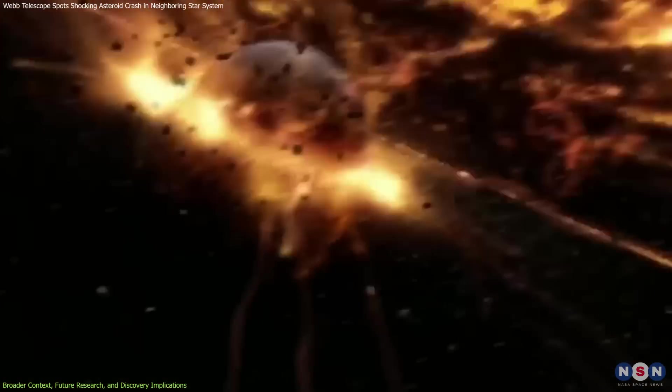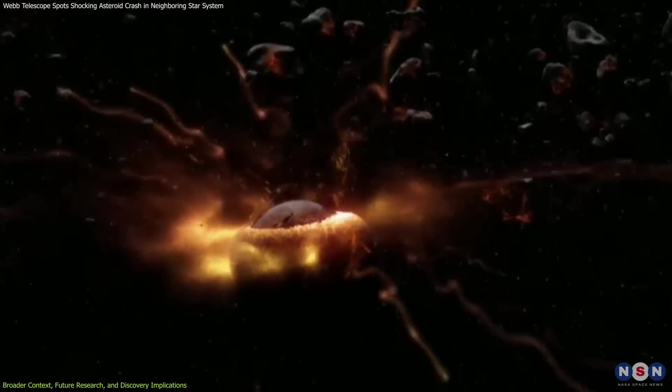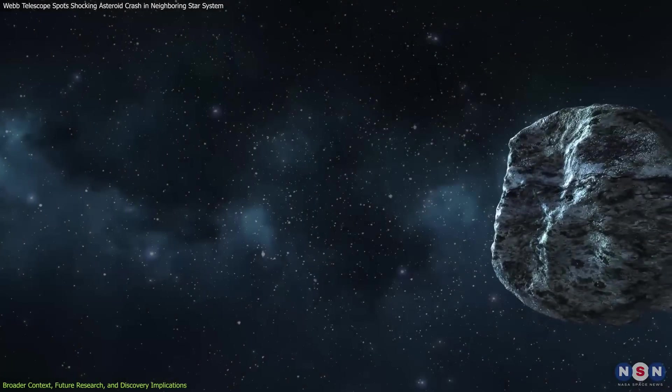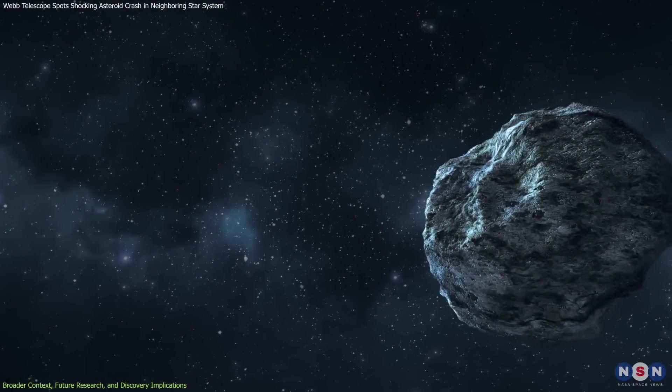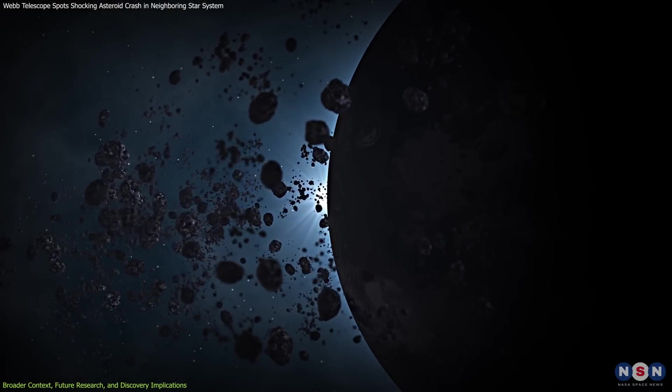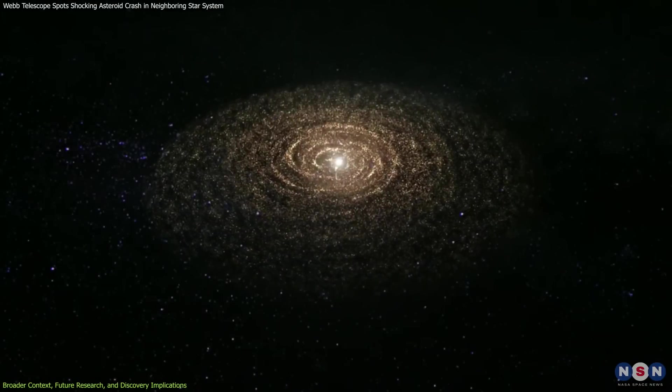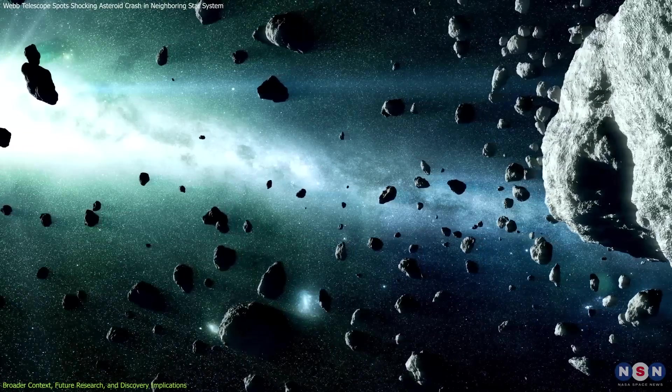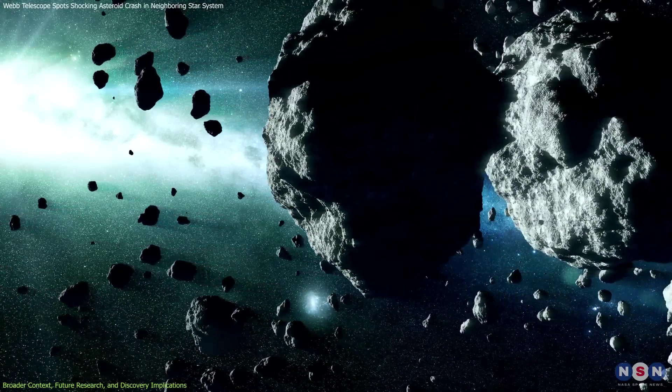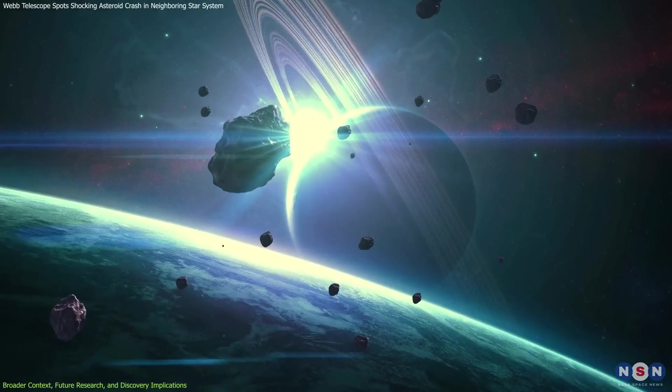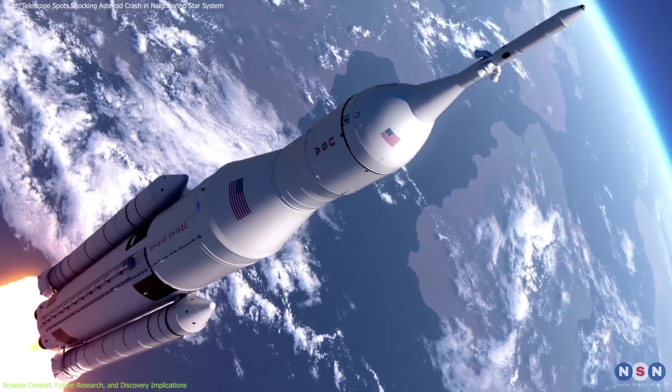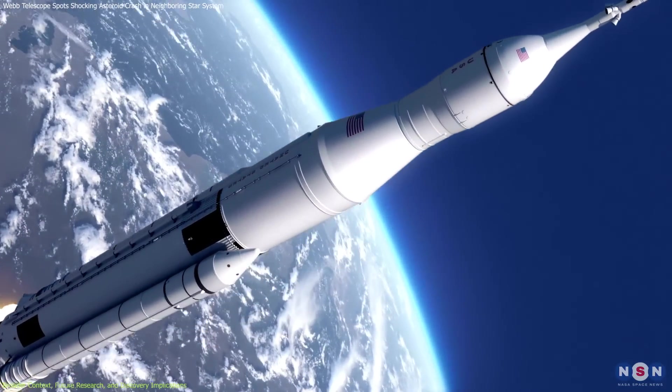The fragments from these collisions offer valuable opportunities for sample return missions. These fragments, like those targeted by the OSIRIS-REx mission, contain crucial information about asteroid composition, structure, and history. Asteroid fragments also act as cosmic time capsules, preserving material from the early solar system. Comparative studies with fragments from other asteroids advance our understanding of solar system evolution. Additionally, these fragments could serve as raw materials for future space missions, providing resources like water and metals needed for long-duration missions and spacecraft propulsion.